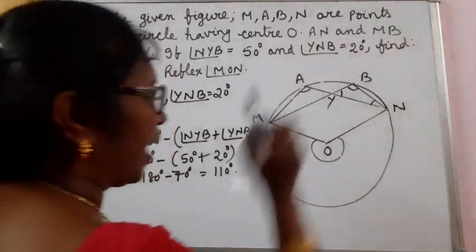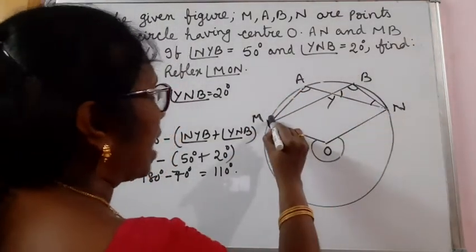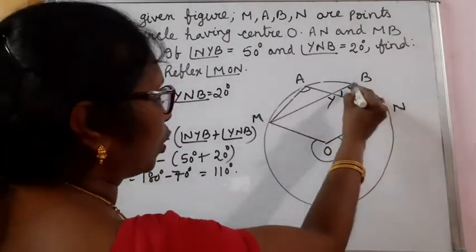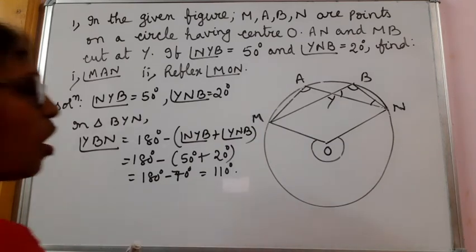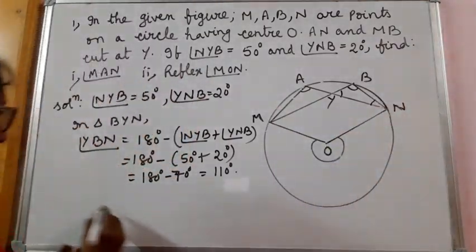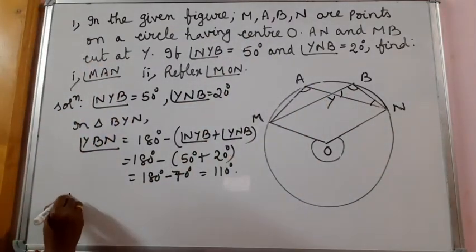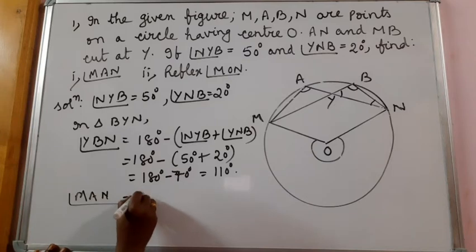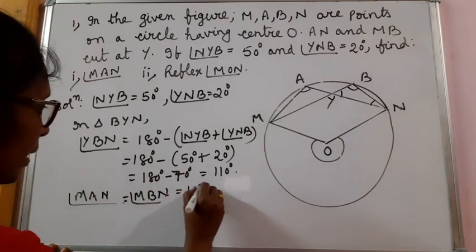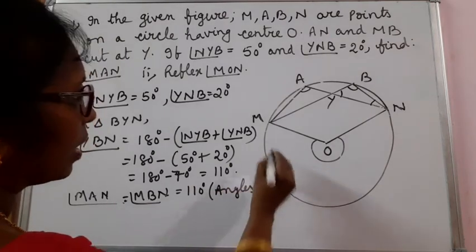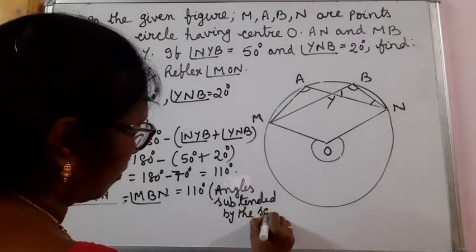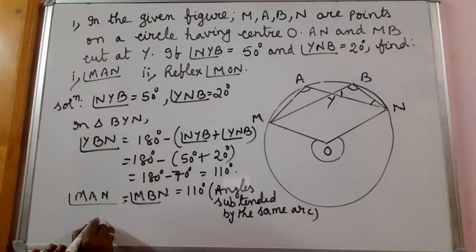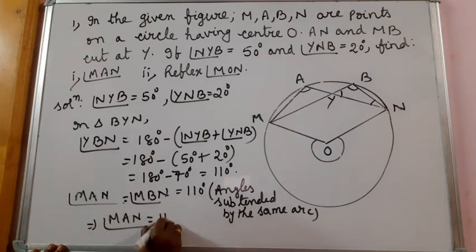But we want angle MAN. We can see that angle MAN and angle MBN — that is angle YBN — are both equal; they are angles in the same segment. You know that angles in the same segment of a circle are equal. All angles subtended by the same arc are equal. So if angle MBN is 110 degrees, angle MAN is also 110 degrees, because they are angles subtended by the same arc. Therefore, angle MAN equals 110 degrees.